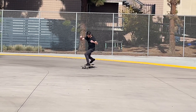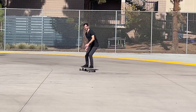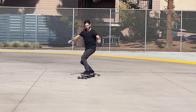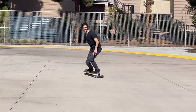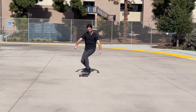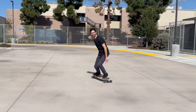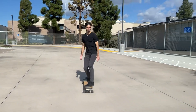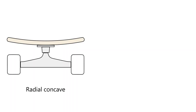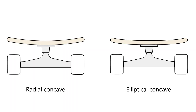Radial concave is useful for boards where a more comfortable ride is desired, as it feels a bit more mellow than the other styles. Elliptical concave is very similar to radial, but with the shape of an elliptical instead of circular arc.